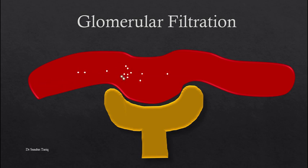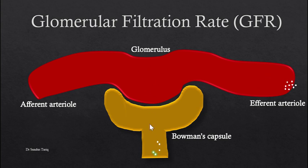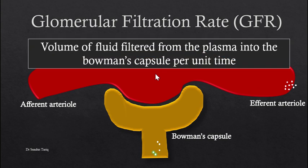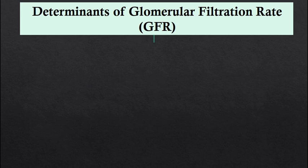In this video we are going to define the glomerular filtration rate and explain the determinants of GFR. Here you can see a simplified version of the Bowman's capsule, renal tubules, the afferent arteriole forming the capillary plexus called the glomerulus, and the efferent arteriole. Fluid is filtered from the glomerulus into the Bowman's capsule, and when measured per unit time, that is called the glomerular filtration rate. GFR is defined as the volume of fluid filtered from the plasma into the Bowman's capsule per unit time. The GFR formed by all the nephrons of both kidneys is 125 milliliters per minute or 180 liters per day.